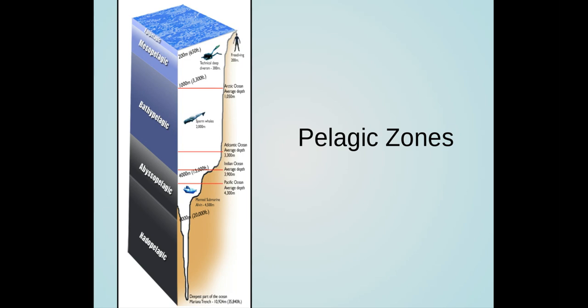Pelagic sub zones: the pelagic zone is further divided up into vertical sub zones as seen in the image on the screen. This biome's vertical zones join with the deep sea biome once the illuminated surface layers are passed.